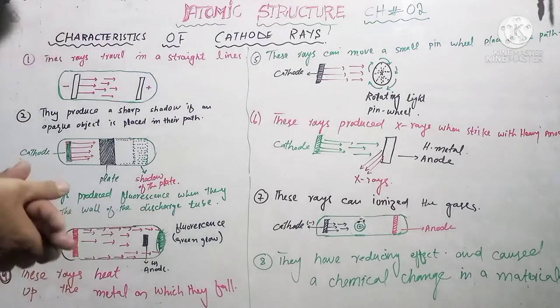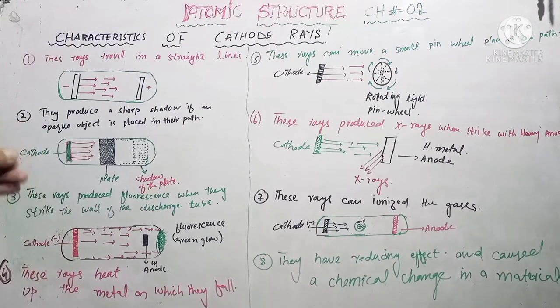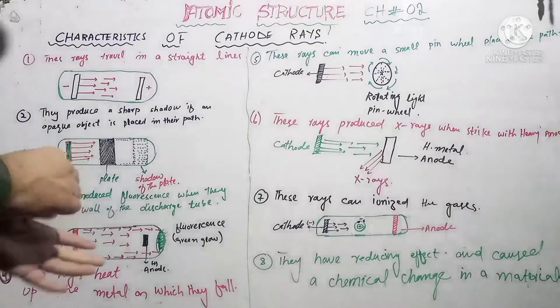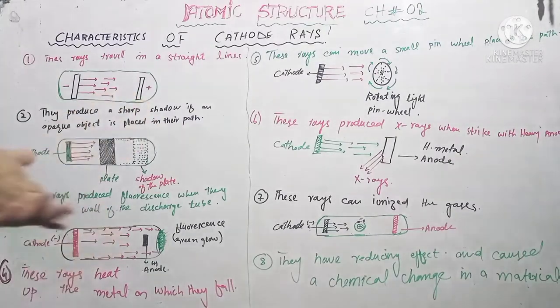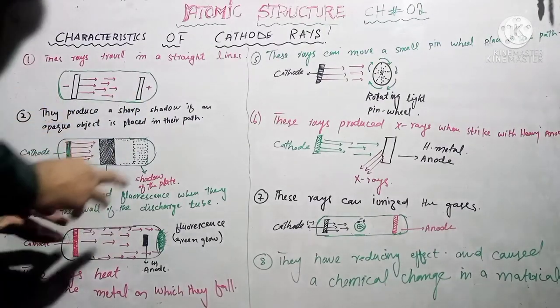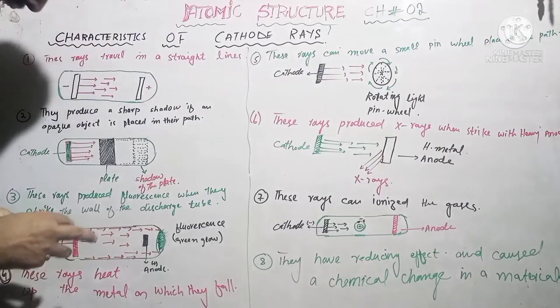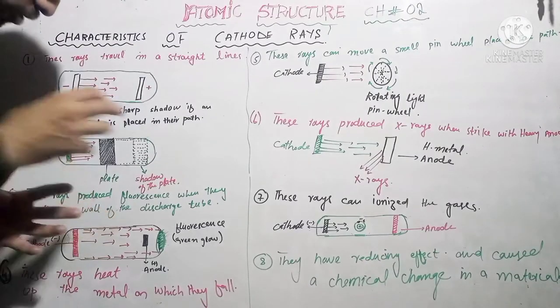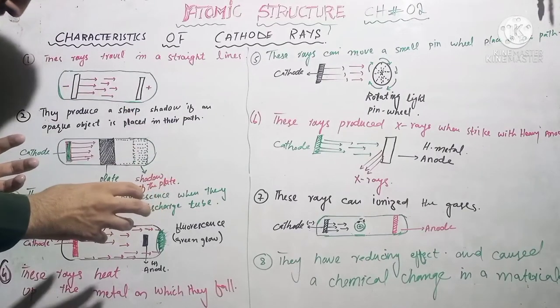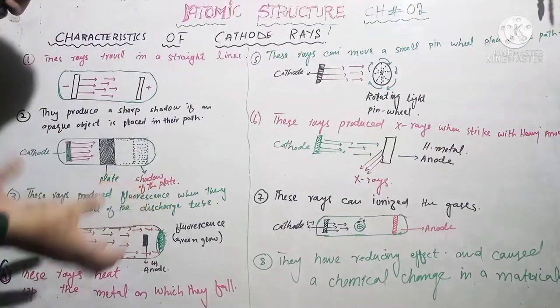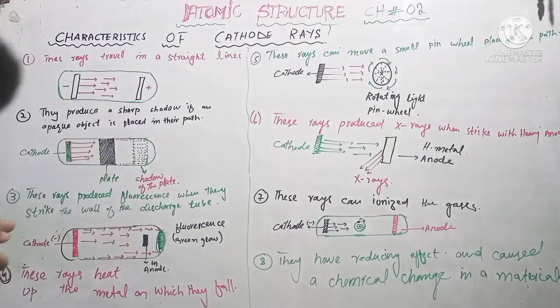The fourth characteristic is that these rays heat the metal on which they fall. When the cathode rays strike a metal surface, they can heat it up.